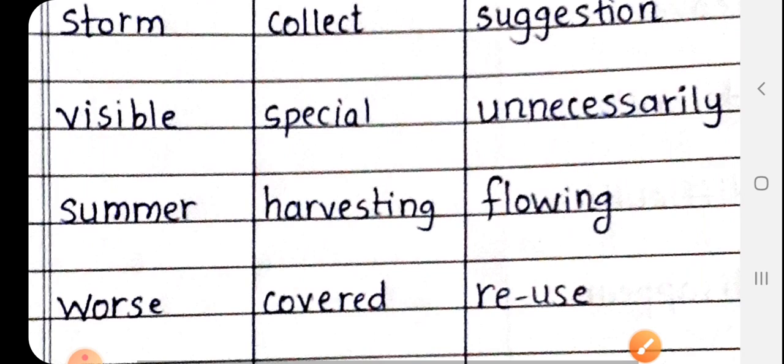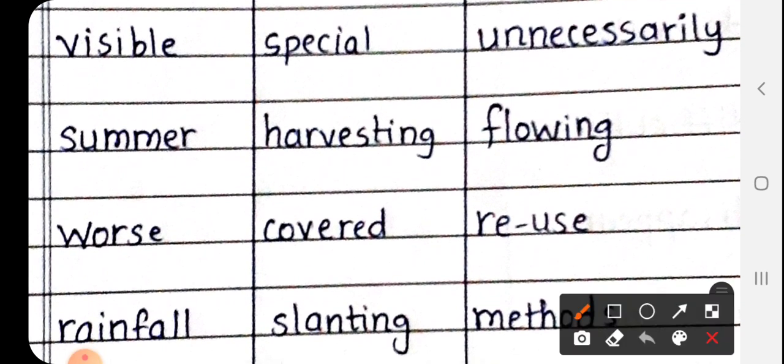Next is visible. V-I-S-I-B-L-E, visible matlab jo dikhai dayta hai, jo bhi chizay usay kahte hai, visible. Next, summer. S-U-M-M-E-R, summer matlab garmi. Next, worse. W-O-R-S-E, worse matlab bura, yafir kharab.